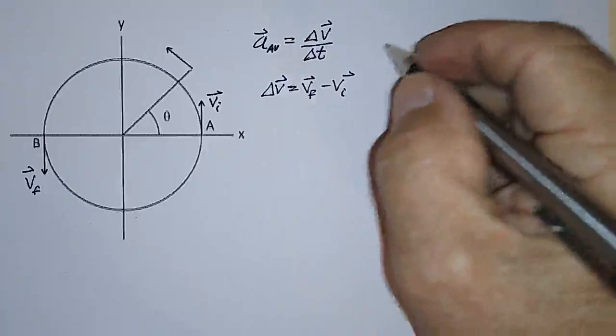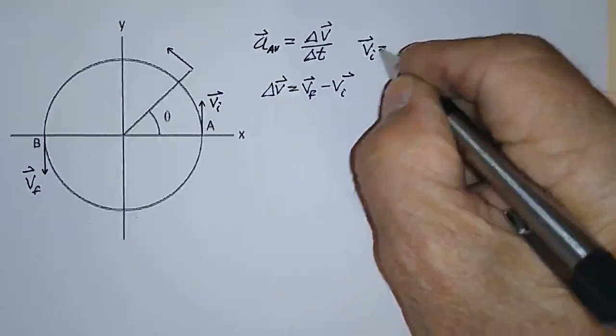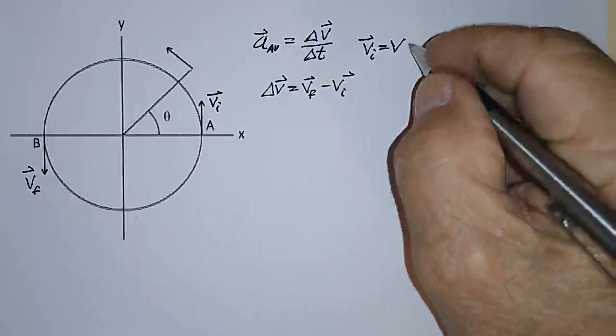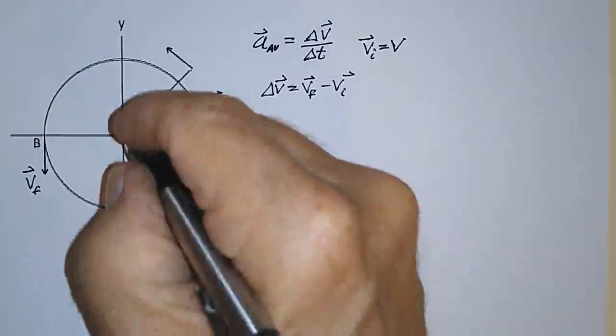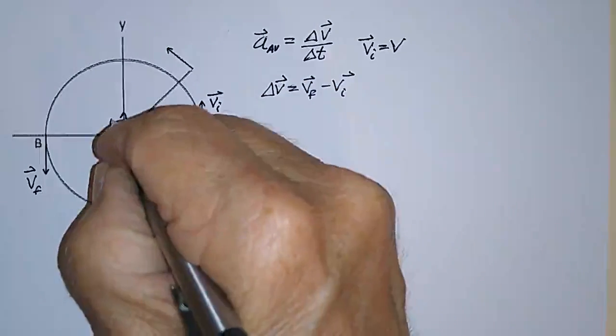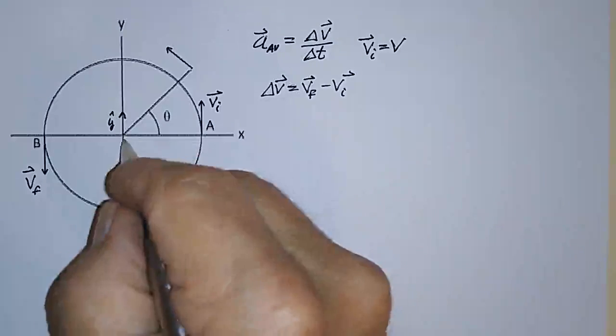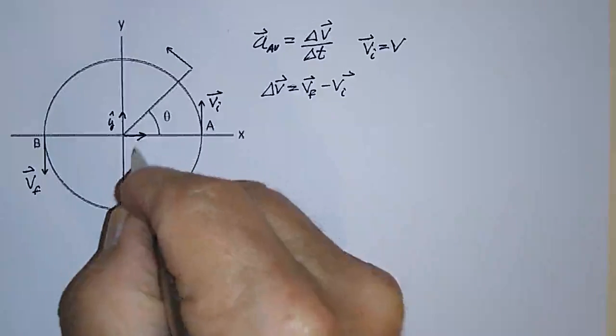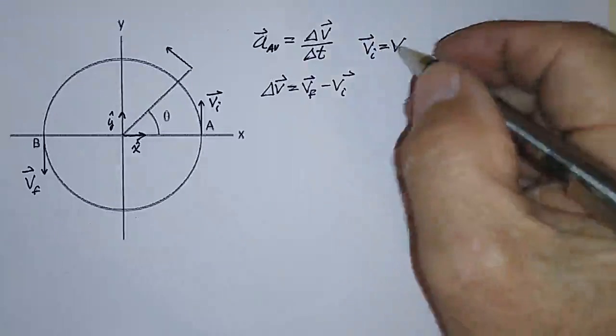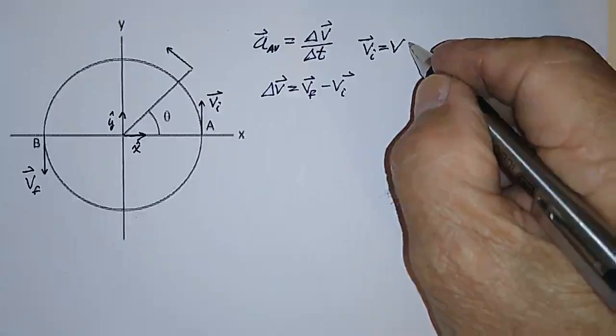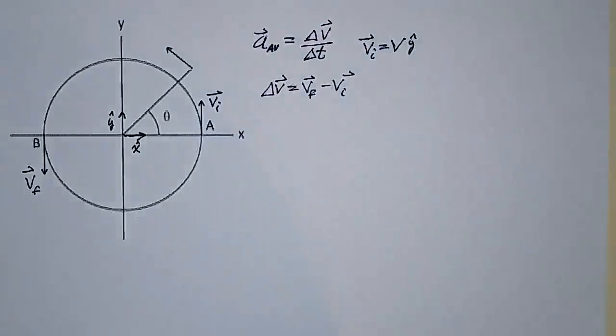And let's see, V initial is just equal to V, the speed, and it's in the plus Y hat direction, where this is the unit vector in the Y direction, and this is a unit vector in the X direction. So this is just V in the plus Y direction.